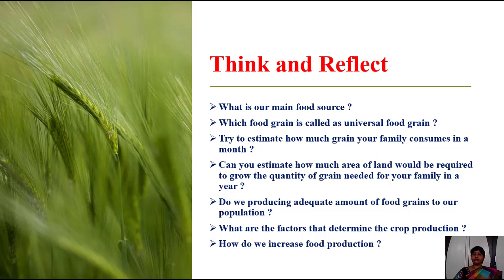Hello children, today we are going to learn another interesting topic. Before entering into the topic, please think and reflect: what is our main food source? Living organisms get food mainly from plants and animals. Some food sources are not related to plants or animals — for example, salt, which we get from mines and also from oceans. So the main food sources are plants and animals.